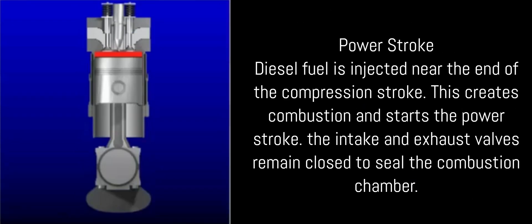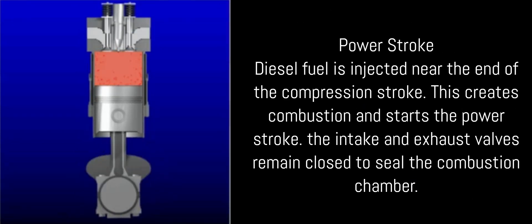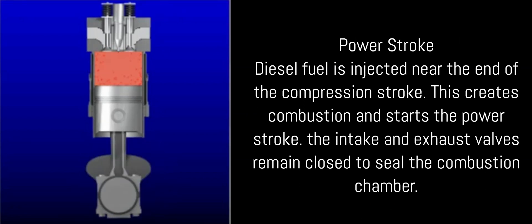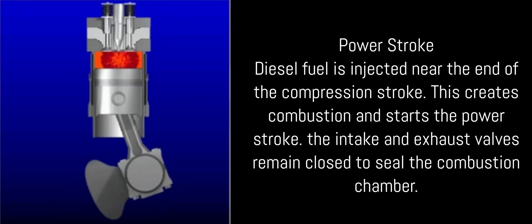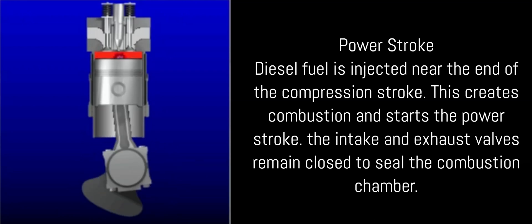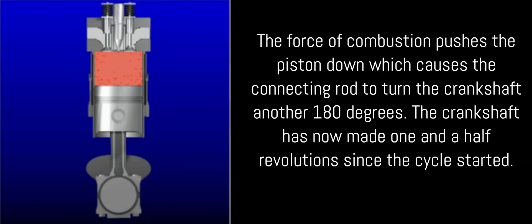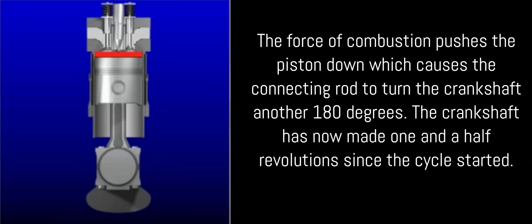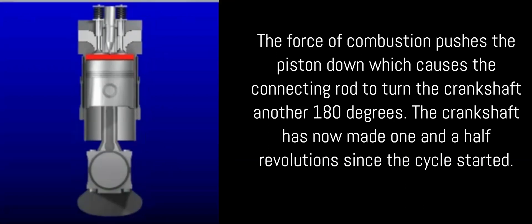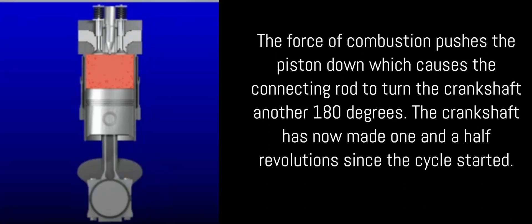Power stroke: Diesel fuel is injected near the end of the compression stroke. This creates combustion and starts the power stroke. The intake and exhaust valves remain closed to seal the combustion chamber. The force of combustion pushes the piston down, which causes the connecting rod to turn the crankshaft another 180 degrees. The crankshaft has now made one and a half revolutions since the cycle started.